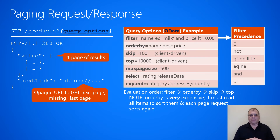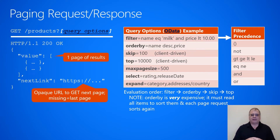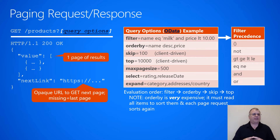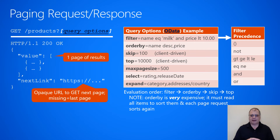Now let's talk about query options. Some services support these; some do not. As mentioned, Azure models them after OData specifications. Typical query options include filter, order by, skip, and top — and that's how we implement client-driven paging.